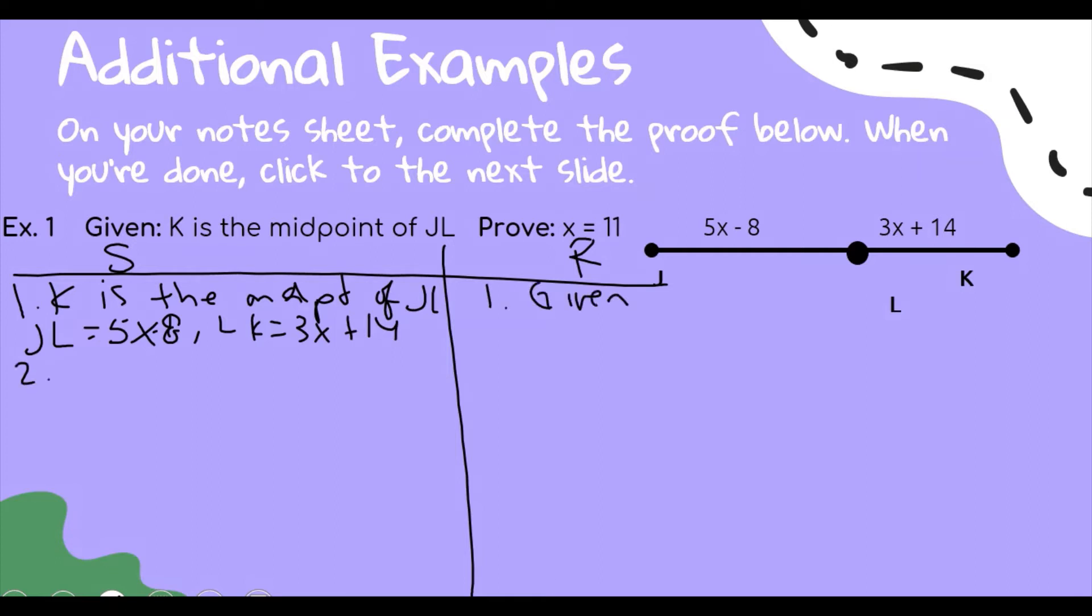From there I need to think of what I can say from the given that would be helpful. Well, there's a vocabulary word in there: midpoint. So I'm going to use the definition of midpoint, which states that it's a point that divides a segment into two congruent segments. So segment JL is congruent to segment LK, and that is the definition of midpoint.